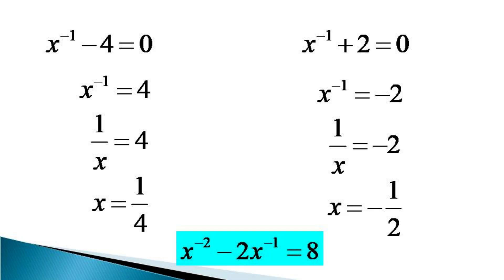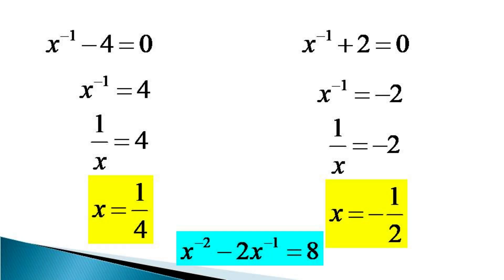When we verify both these values through the original equation, we can see that both the values for x — that is, x is equal to 1 by 4 and x is equal to minus 1 by 2 — satisfy the given equation, and hence these two values are the solutions of the given exponential equation.